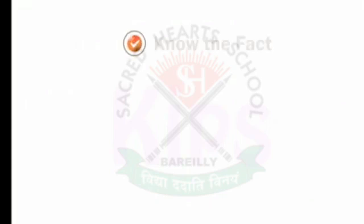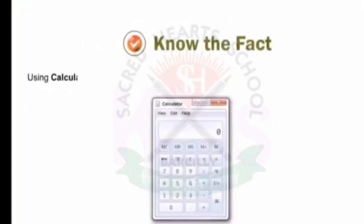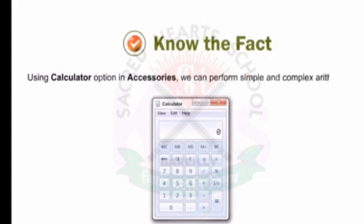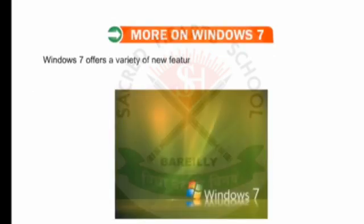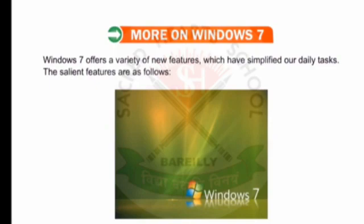Students, note that using the Calculator option in Accessories, we can perform simple and complex arithmetic calculations on the computer. Let us now learn more about Windows 7. Windows 7 offers a variety of new features which have simplified our daily tasks. The salient features are as follows.